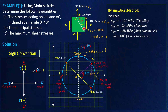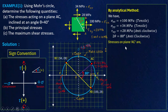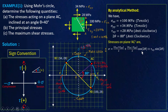The angle of inclination of the plane is also in the anti-clockwise sense, so it is taken as positive — 40 degrees, which we take as 80 degrees (doubled) in the Mohr circle calculation. The stresses on plane AC are given by the expression for normal stress: sigma = (sigma xx + sigma yy)/2 + (sigma xx − sigma yy)/2 × cos(2θ) + tau xy × sin(2θ).